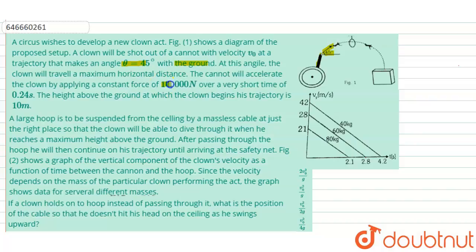The cannon will accelerate the clown by applying a constant force of 10,000 newtons over a very short time of 0.24 seconds — this is the impulsive force. The height above the ground at which the clown begins his trajectory is 10 meters. A large hoop is to be suspended from the ceiling by a massless cable at just the right place so that the clown will be able to dive through it when he reaches maximum height above the ground.